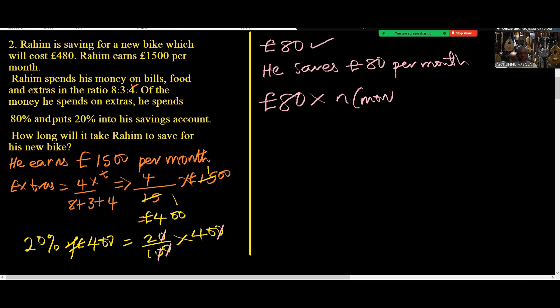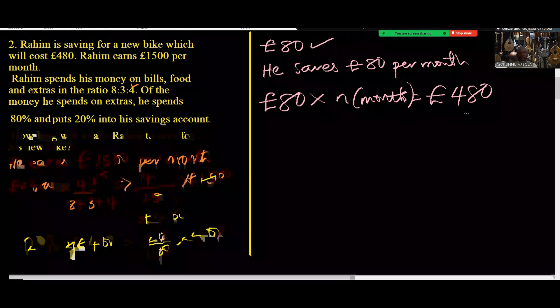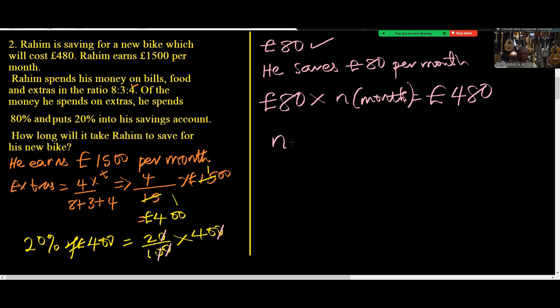N months is going to give us the total amount for the bike which is £480. That means the number of months is going to be £480 divided by £80.